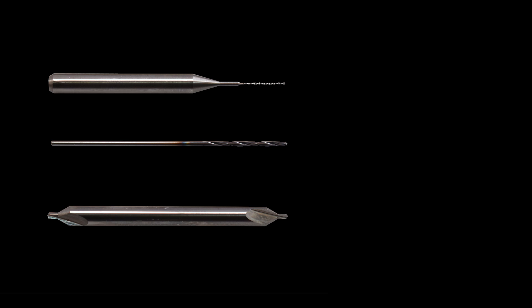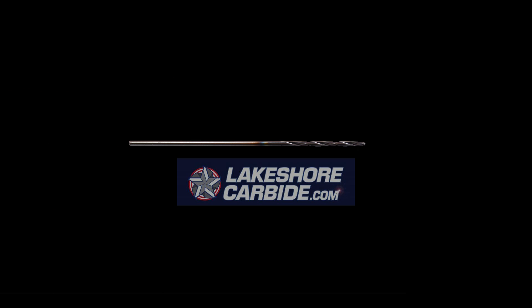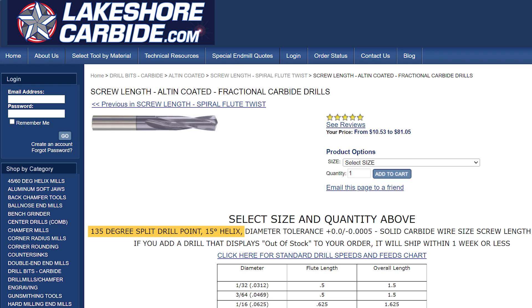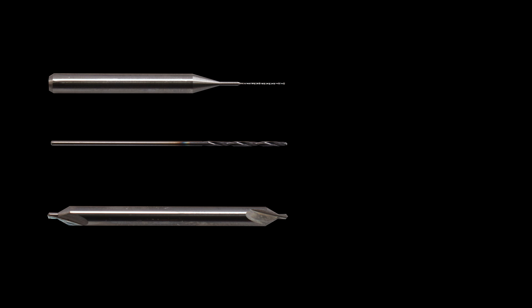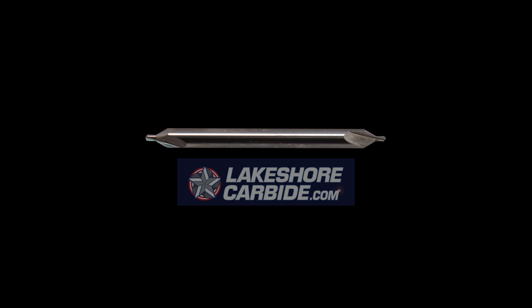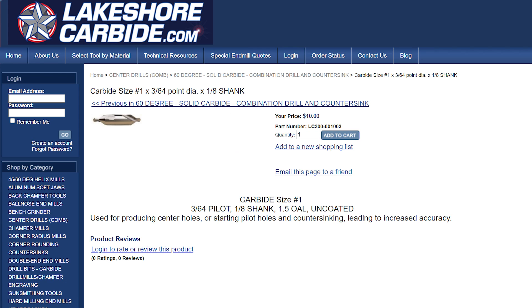The other drill we have is a Lakeshore carbide 135 degree split point drill. It has a 15 degree helix. Its diameter is 1/32nd so it's twice as big. However, it is a straight shank and this does come into play later. Now the third tool is a Lakeshore carbide center drill and that's what we use to spot the holes.